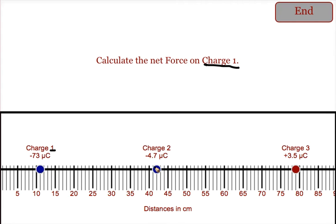So charge 2 is a negative, charge 1 is a negative, so they're going to repel each other. To calculate the strength of that repulsion, we do force electric equals Coulomb's constant, 9.0 times 10 to the 9th.